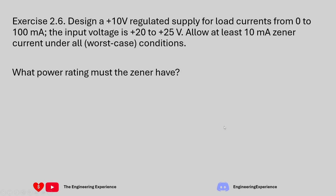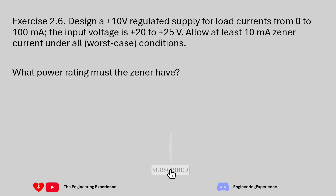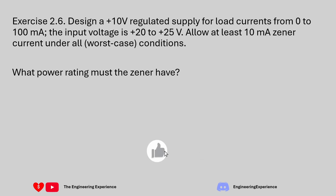The question is asking us to design a 10 volt regulated power supply for load currents from 0 milliamps to 100 milliamps. The input voltage is 20 volts up to 25 volts. We need to allow at least 10 milliamps of Zener current under all worst case conditions. In the second part of the question we need to figure out what power rating the Zener diode must have in order to meet the design requirements.